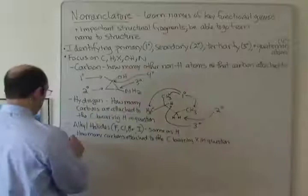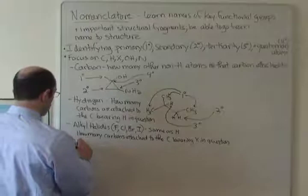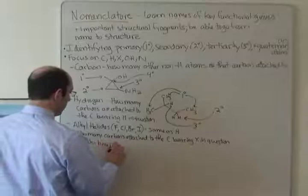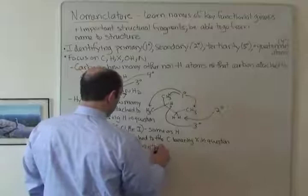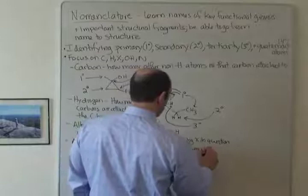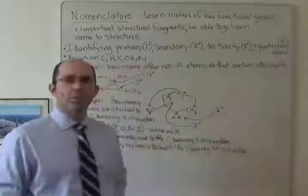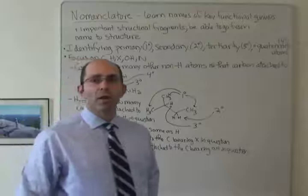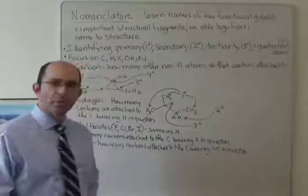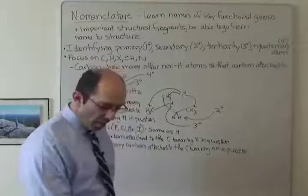And if we look at alcohols, it's the exact same thing: how many carbons are attached to the carbon bearing the OH in question. These may seem like silly rules, but it's going to help us communicate reactivity. When we get to different reactions, knowing whether something is primary, secondary, or tertiary matters — there are some reactions that don't work on tertiary positions, for example. So it's important for us to know how to label and name that.